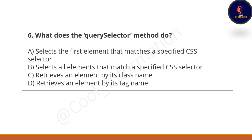Next question: What does the querySelector method do? Option A: selects the first element that matches a specified CSS selector. Option B: selects all elements that match a specified CSS selector. Option C: retrieves an element by its class name. Option D: retrieves an element by its tag name. The correct option is A — querySelector selects the first element matching a specified CSS selector.